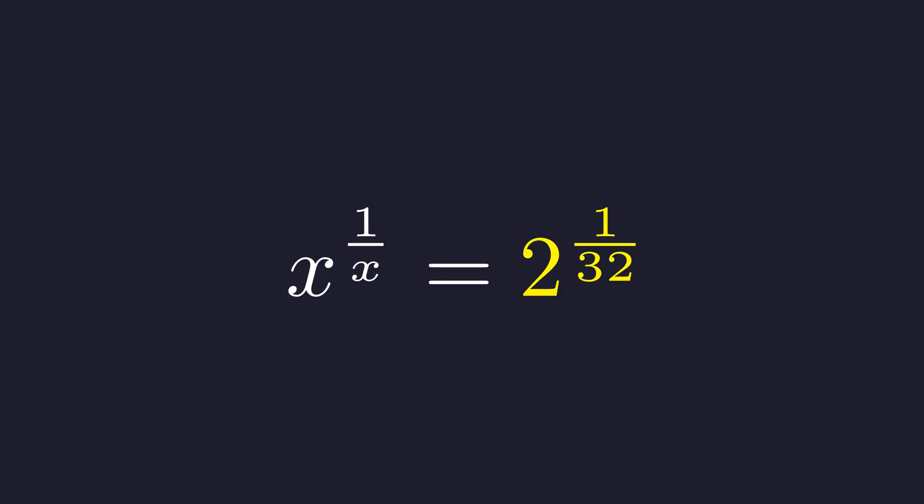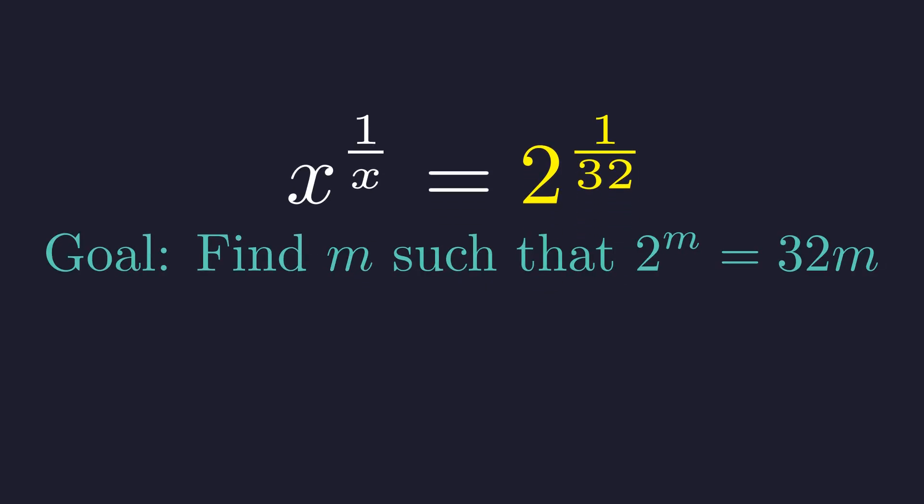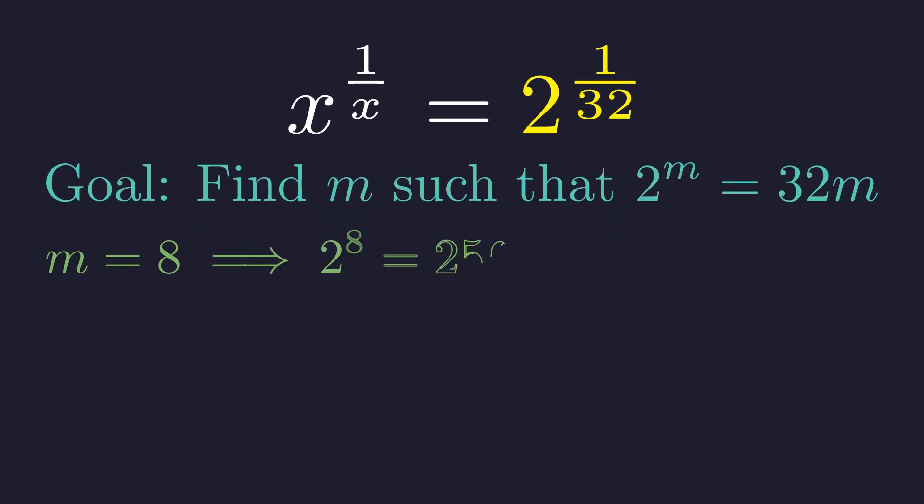The key insight is finding an integer m that makes this work. If we multiply numerator and denominator by m, we need 2 to the m to equal 32 times m. We're looking for an m where 2 to the m equals 32m. Let's try a few values. And remarkably, m equals 8 works perfectly.